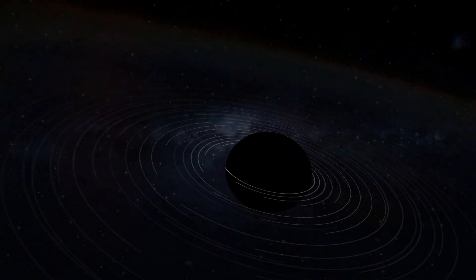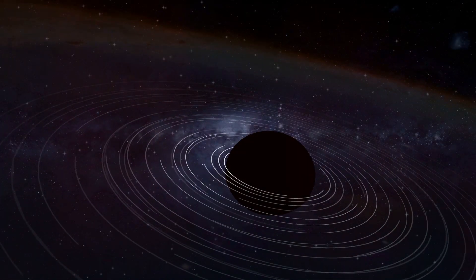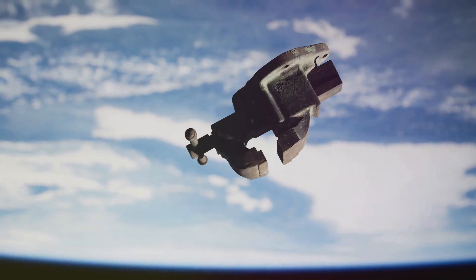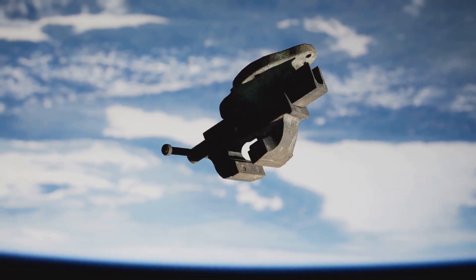Moving a planet requires overcoming its immense gravitational pull. This is where the concept of exotic matter comes into play. Exotic matter is a hypothetical form of matter that has negative mass.